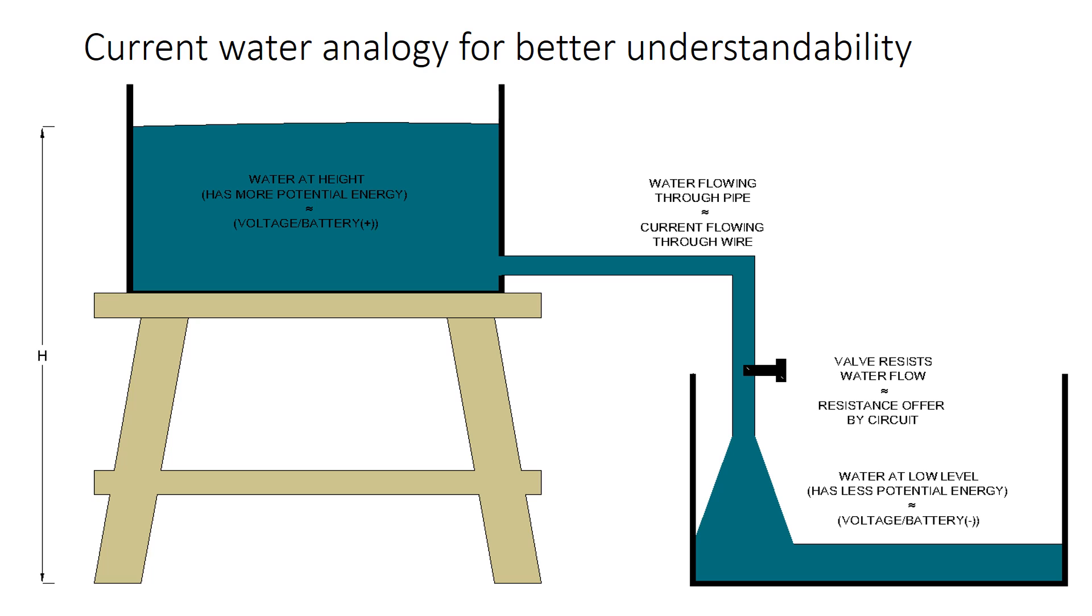A tank filled with water, placed at a height above the ground, is analogous to the positive terminal of the battery in a circuit, which is at a higher potential. Work done in lifting the tank filled with water is stored as potential energy in it. Water flowing through the pipe from the tank raised above the ground is analogous to current flowing through the circuit.